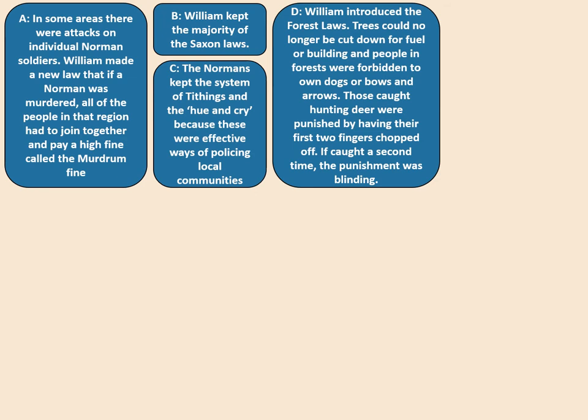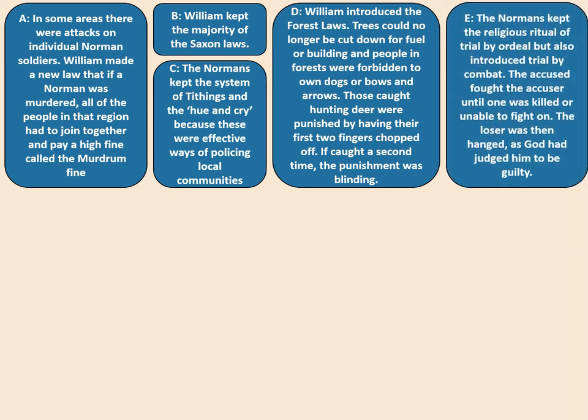Card D: William introduced the forest laws — trees could no longer be cut down for fuel or building, and people in forests were forbidden from owning dogs, bows, or arrows. Those caught hunting deer had their first two fingers chopped off; a second offence meant blinding. Card E: the Normans kept the religious ritual of trial by ordeal but also introduced trial by combat, where the accused fought the accuser until one was killed or unable to fight on — the loser was hanged, as God had judged him guilty. You could appoint a champion to fight on your behalf, which often favoured the strong or the wealthy.